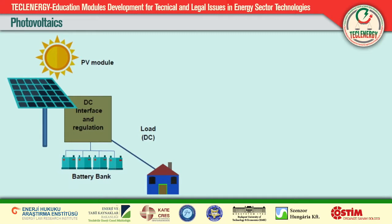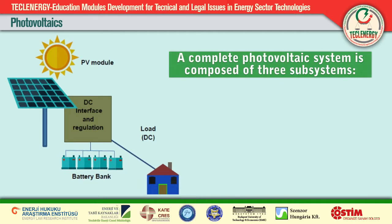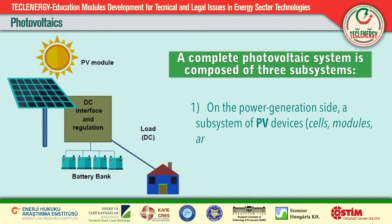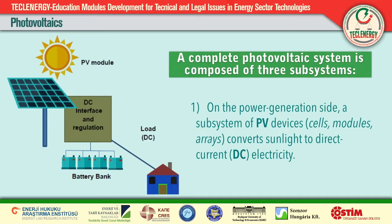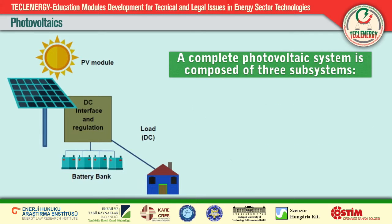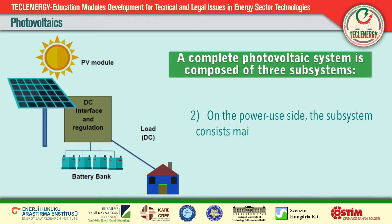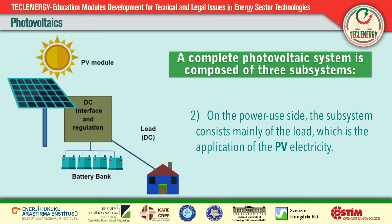Photovoltaics, or solar cells as they are often referred to, are semiconductor devices that convert sunlight into direct current electricity. The term 'photo' is a stem from the Greek word for light, and 'volt' is named for Alessandro Volta, a pioneer in the study of electricity. Photovoltaic therefore literally means 'light electric.' Scientific investigation of the photovoltaic effect started in 1839 when the French physicist Henri Becquerel discovered the release of positive and negative charge carriers in a solid state when light strikes its surface.